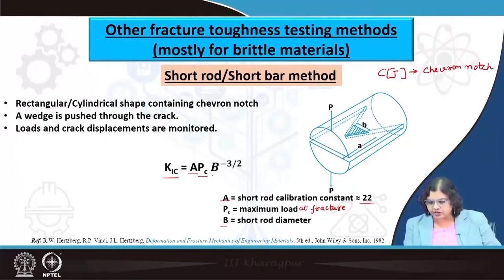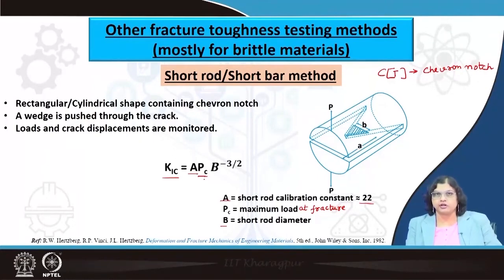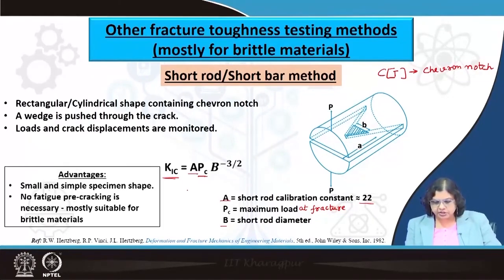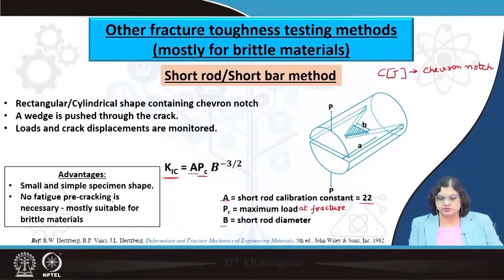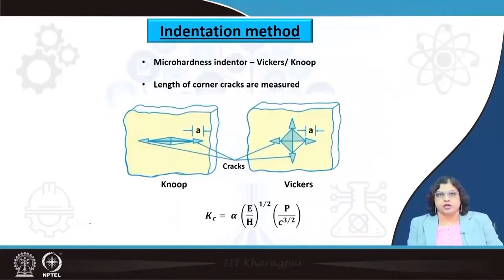The major advantages of the short rod or bar method are that it requires a small and simple specimen, no large specimen that is difficult to machine is needed, there is no need for fatigue pre-cracking, and it is particularly suitable for brittle materials.